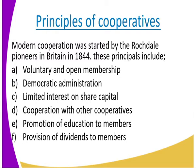Number four is cooperation with other cooperatives. They must be able to cooperate with other cooperatives, which is where we have unions — more than one cooperative cooperating together. Number five is promotion of education to the members; the cooperative is responsible for offering educational and advisory services to its members. Number six is provision of dividends to the members — every year, the profit interest the cooperative earns is divided according to the shares, and that is what is referred to as dividends.